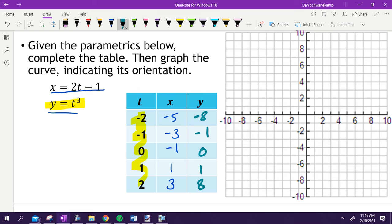So then we're going to graph them. Negative 5, negative 8. Negative 3, negative 1. Negative 1, 0. 1, 1, and then 3, 8. Connect those dots.